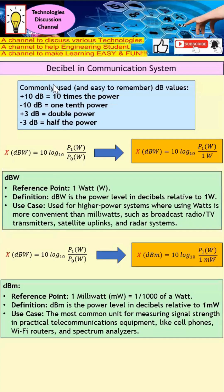This is part 2 of the series discussion on decibels in communication. Let's look at commonly used dB values. Starting with +10 dB and -10 dB: when power is +10 dB, the power actually increased by 10 times — the original power is multiplied by 10. When it is -10 dB, the power is divided by 10. So plus 10 dB means power increased by 10 times; minus 10 dB means power reduced by 10 times.